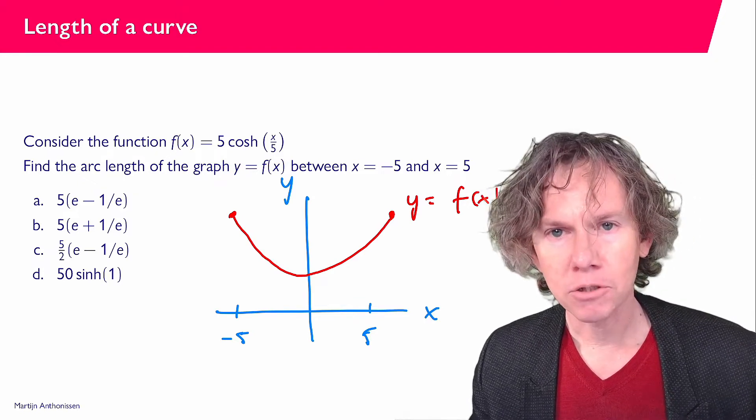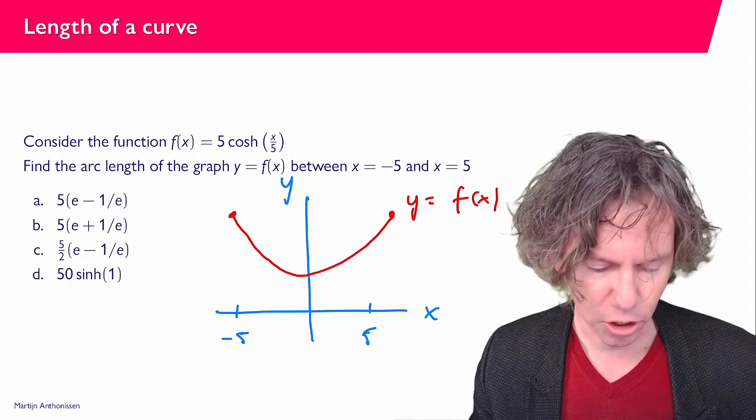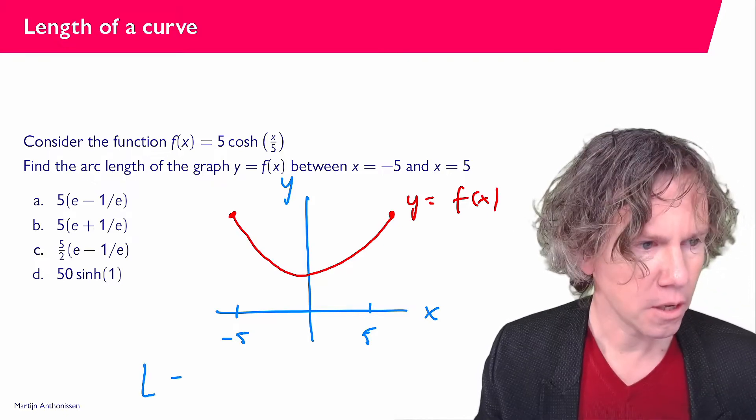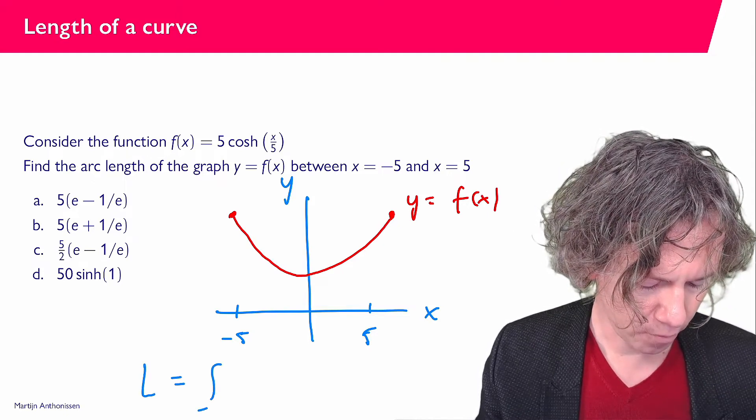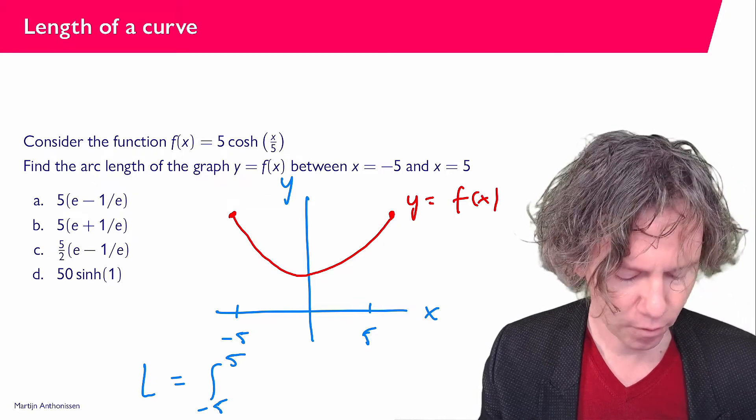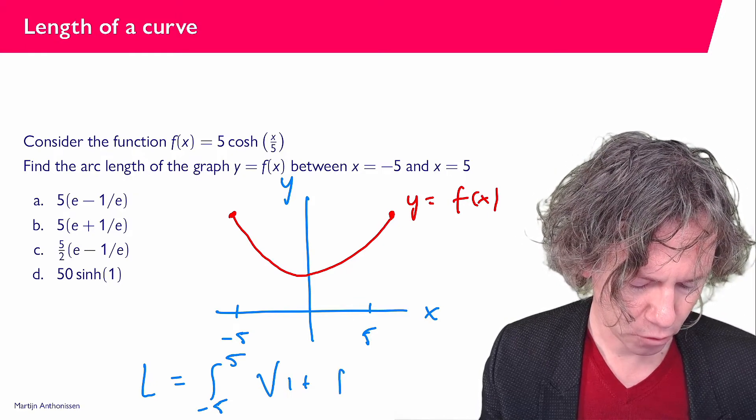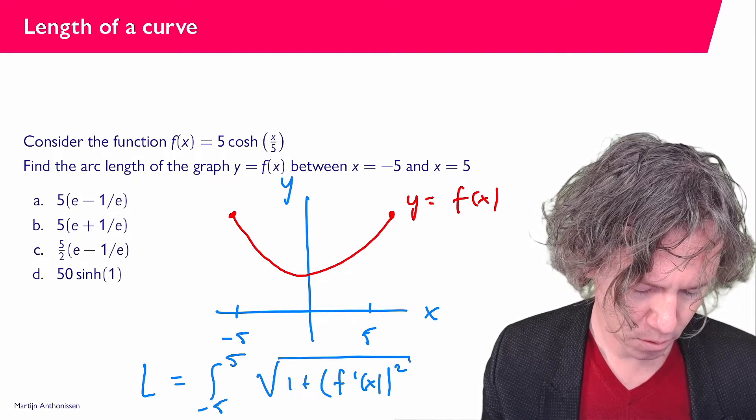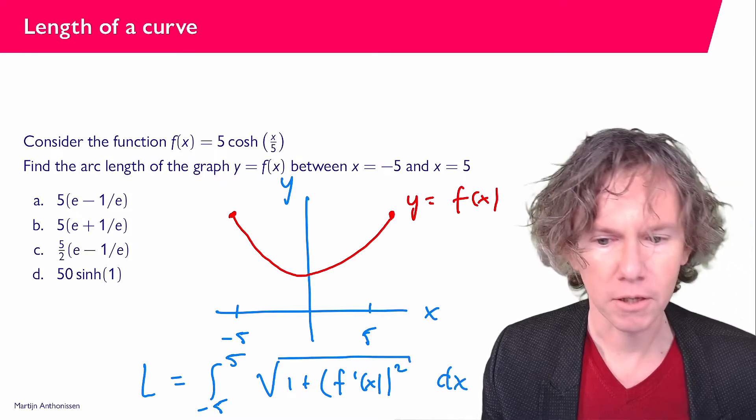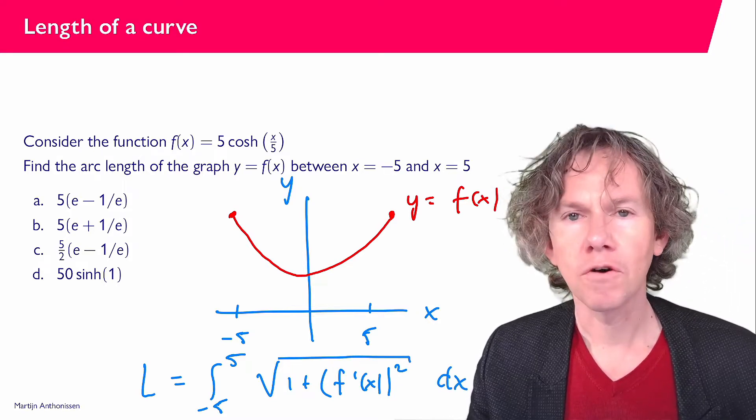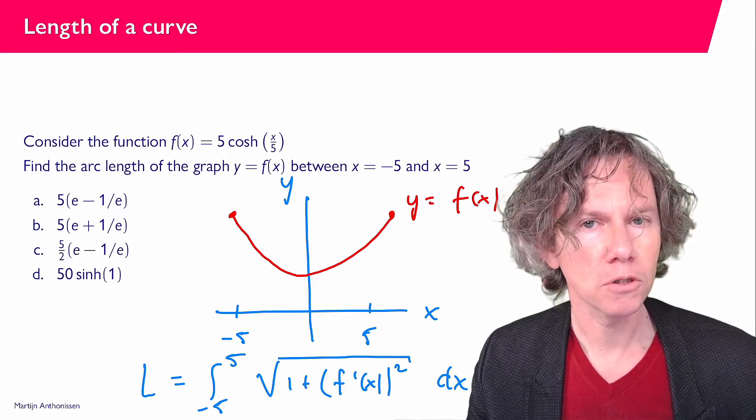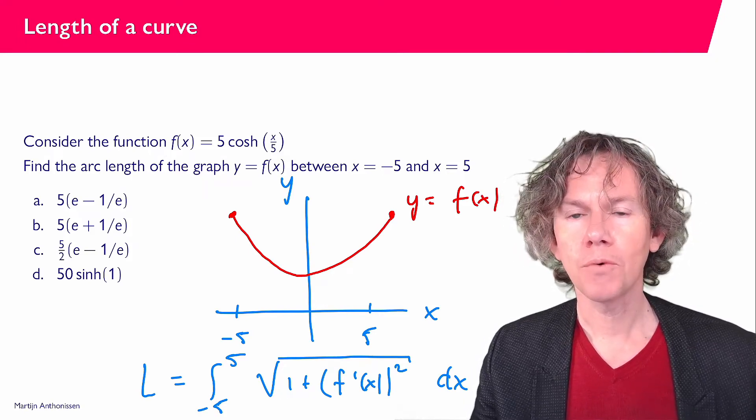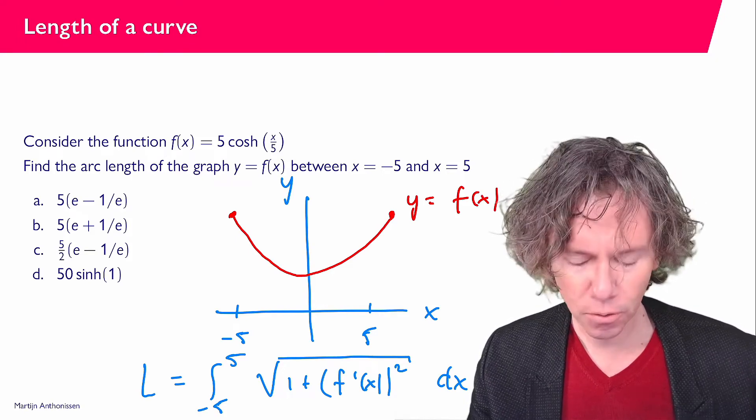Now, in mathematics, this is called the arc length. The general formula for that is L equals the integral from minus 5 up to 5 of square root of 1 plus the derivative squared dx. In general, this is very hard to compute and only for very special functions can we compute this integral exactly. The cosine hyperbolic is one where we can do this. So let's see how this goes.